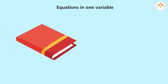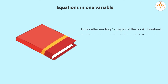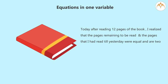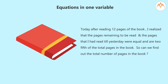Nowadays I am reading a book. Till yesterday I had read some pages. Today, after reading 12 more pages, I realized that the pages remaining to be read and the pages I had read till yesterday were equal, and are two-fifths of the total pages in the book. Can we find out the total number of pages in the book?